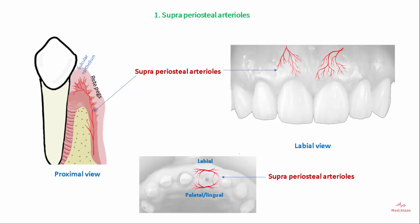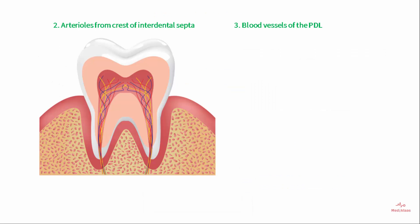Sometimes the arterioles branch out and pass through the periodontal ligament or run over the crest of the alveolar bone. Arterioles from the crest of the interdental septa.